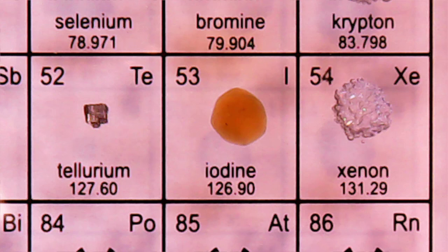Iodine — yes, that has a smell if you've ever smelt it. It has this sort of deep red going to an orangey colour, and you might have had it painted on you as an antiseptic used on wounds or to clean your skin before surgery. And then xenon — another noble gas, xenon is used in a special kind of light bulb that gives really, really bright flashes of light, used in camera flashes and things like that.